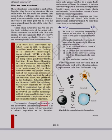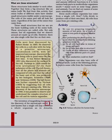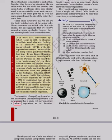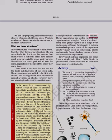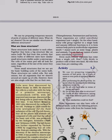The invention of magnifying lenses led to the discovery of the microscopic world. It is now known that a single cell may constitute a whole organism, as in amoeba, Chlamydomonas, Paramecium and bacteria. These organisms are called unicellular organisms — uni meaning single. On the other hand, many cells group together in a single body and assume different functions in it to form various body parts in multicellular organisms — multi meaning many — such as some fungi, plants and animals. Every multicellular organism has come from a single cell. Cells divide to produce cells of their own kind; all cells thus come from pre-existing cells.